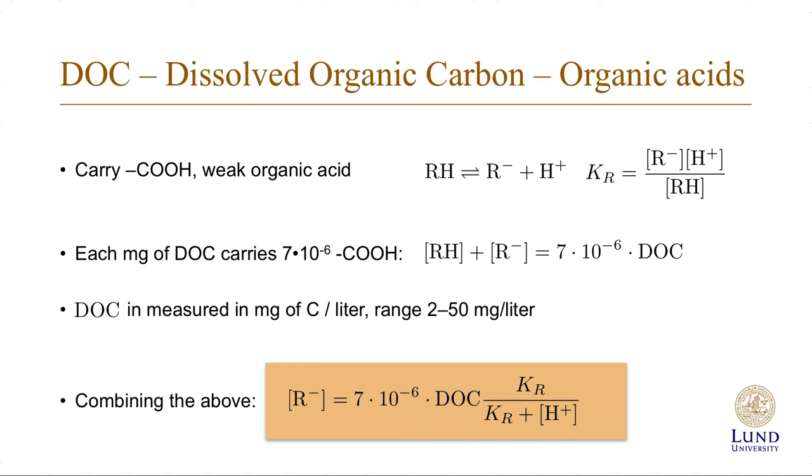So combining the above equations, we can get an expression for R minus, and that is 7 times 10 to the minus 6 times the measured DOC values times the ratio between KR and KR plus H plus.